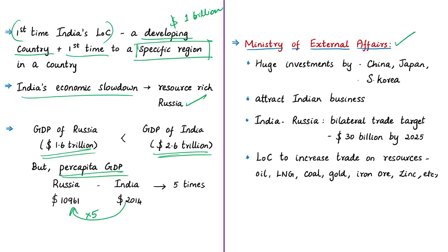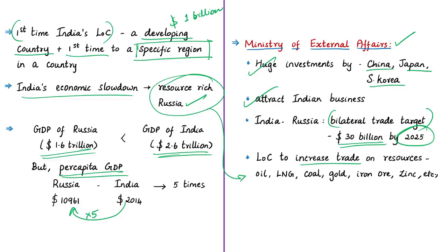The External Affairs Ministry also stated that India and Russia have targets to achieve 30 billion dollars of annual bilateral trade by 2025, and the Line of Credit is expected to help reach this target. The far east region has major natural resource deposits such as oil, natural gas, coal, gold, iron ore, and zinc, so increasing trade will give Indian industries access to these resources. The Line of Credit will also attract more Indian businesses to this region.